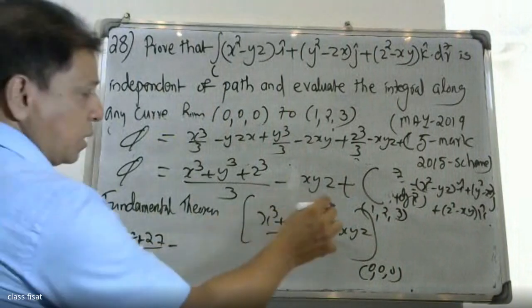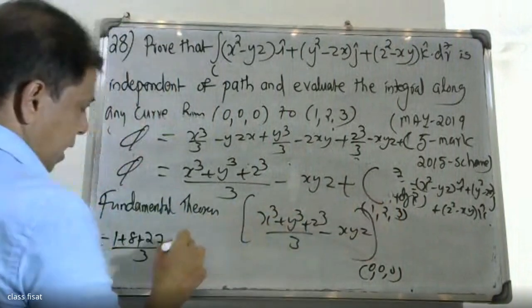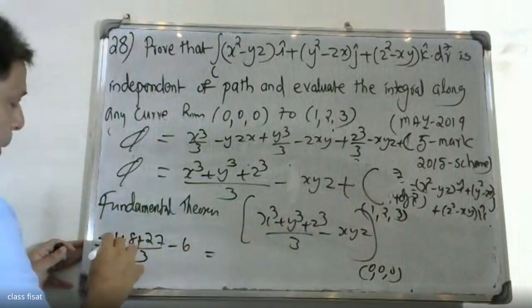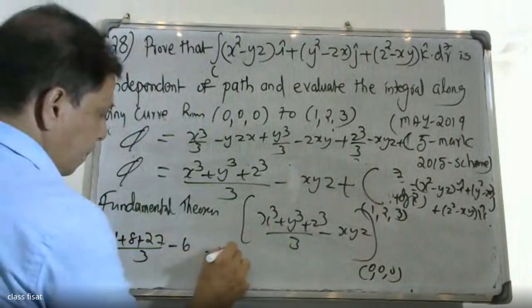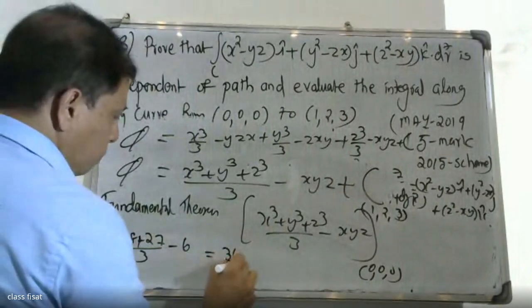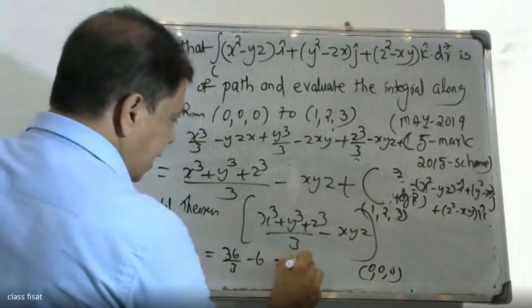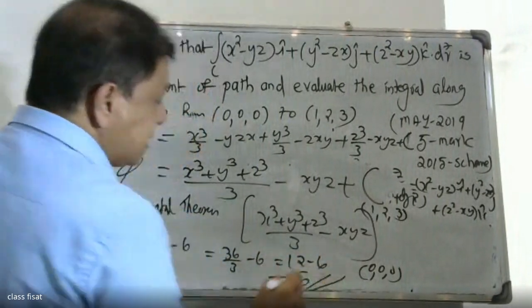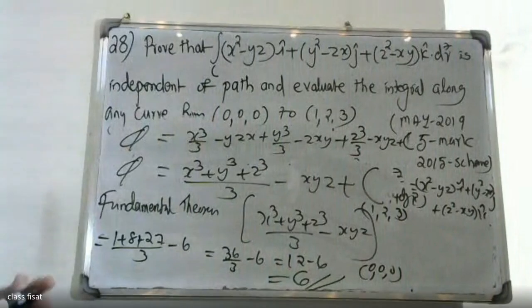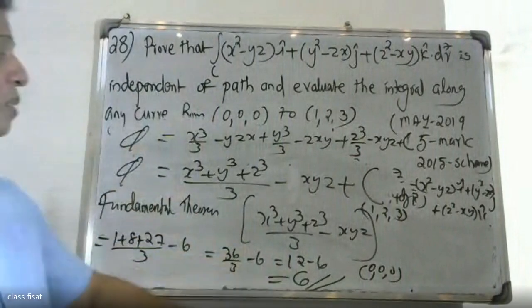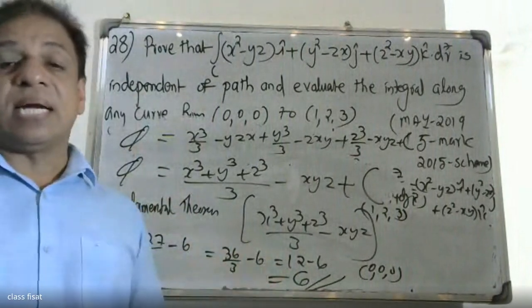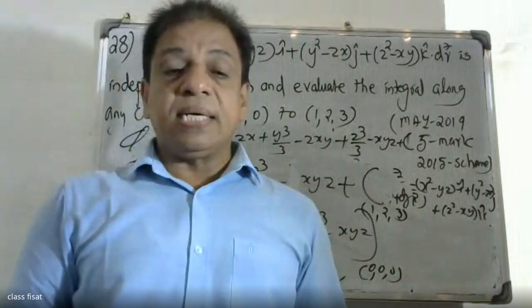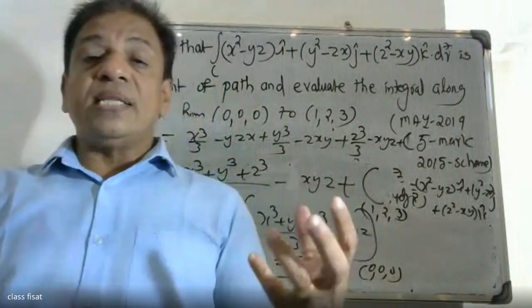Substituting (1,2,3): φ(1,2,3) = (1 + 8 + 27)/3 - (1)(2)(3) = 36/3 - 6 = 12 - 6 = 6. And φ(0,0,0) = 0. Therefore the final answer is 6.